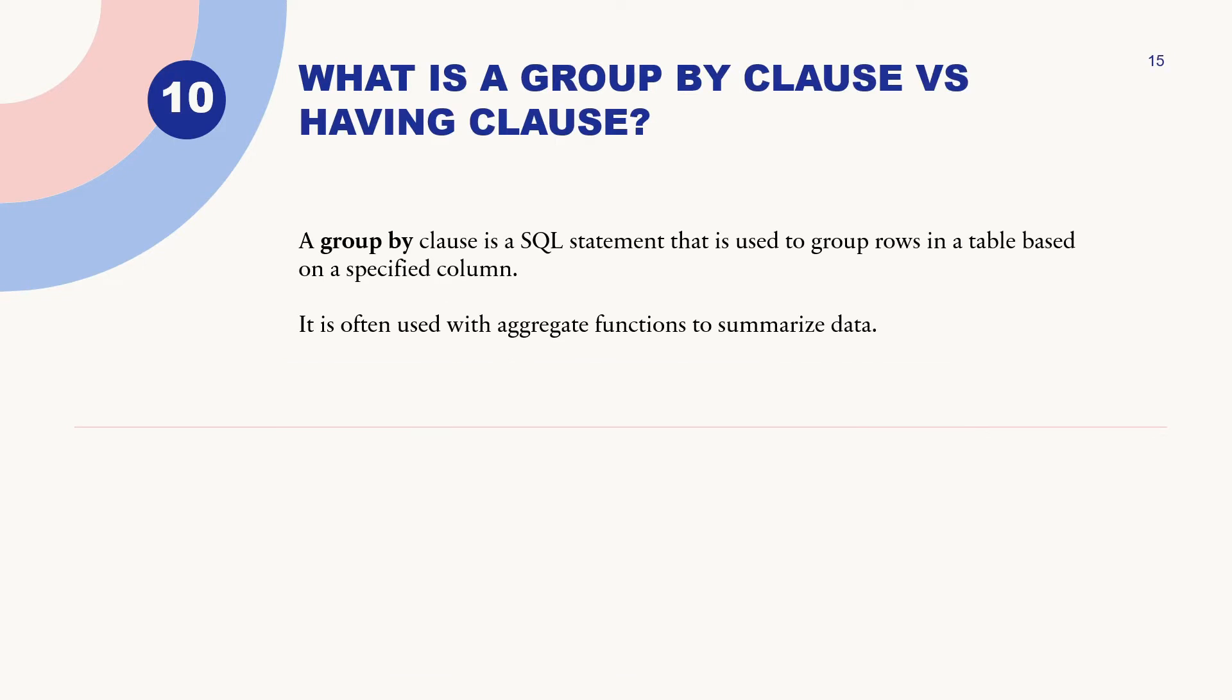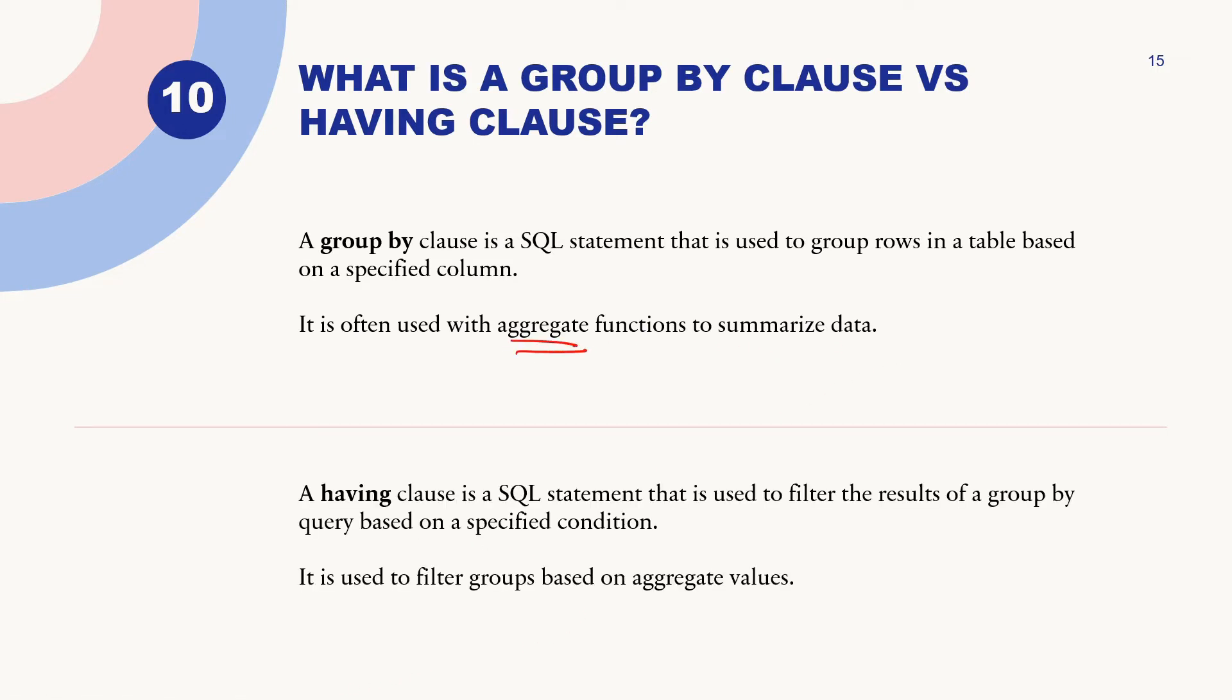What is GROUP BY clause versus HAVING clause? GROUP BY clause in SQL is used to group rows in a table based on a specific column. It's often used with aggregate functions to summarize data. HAVING clause is used to filter the result of a GROUP BY query based on specific conditions, filtering groups based on aggregate values. We'll talk more about this in our practical session.